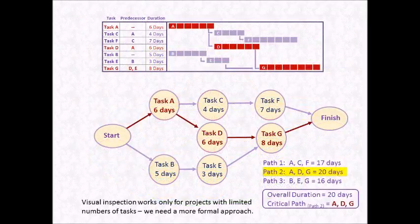For consistency, I've redrawn the network diagram using only the Activity on Node technique. By examining our network diagram, we can learn quite a bit of information about the project. For example, there are three parallel paths through the project. Path 1 consists of tasks A, C, and F. Path 2 consists of tasks A, D, and G. And path 3 consists of tasks B, E, and G.